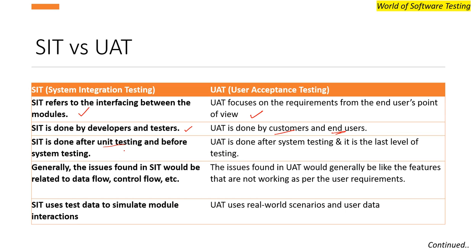SIT is done after unit testing and before system testing. If you know the V-model, you can see unit testing comes first, then SIT above it, then system testing, and then UAT. So UAT is done after system testing and is the last level of software testing.